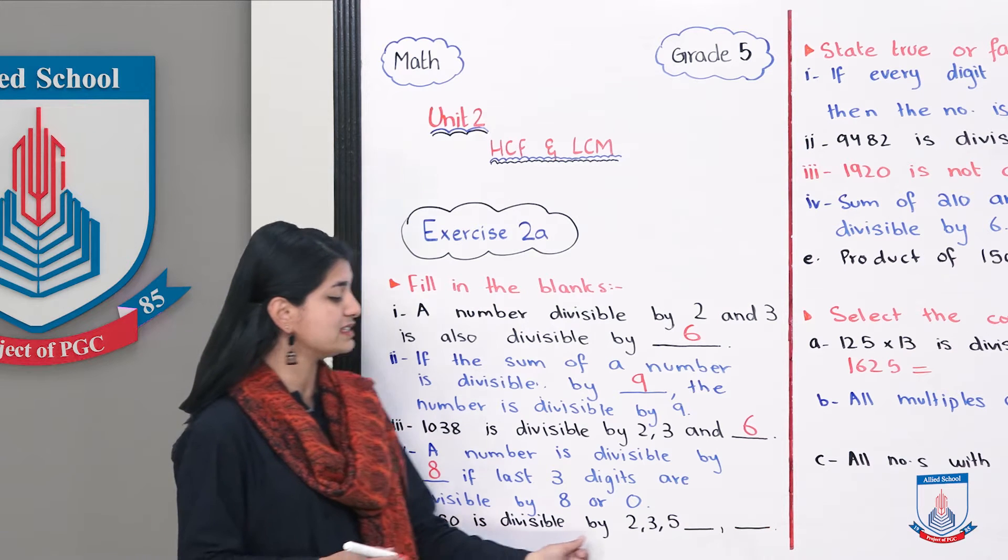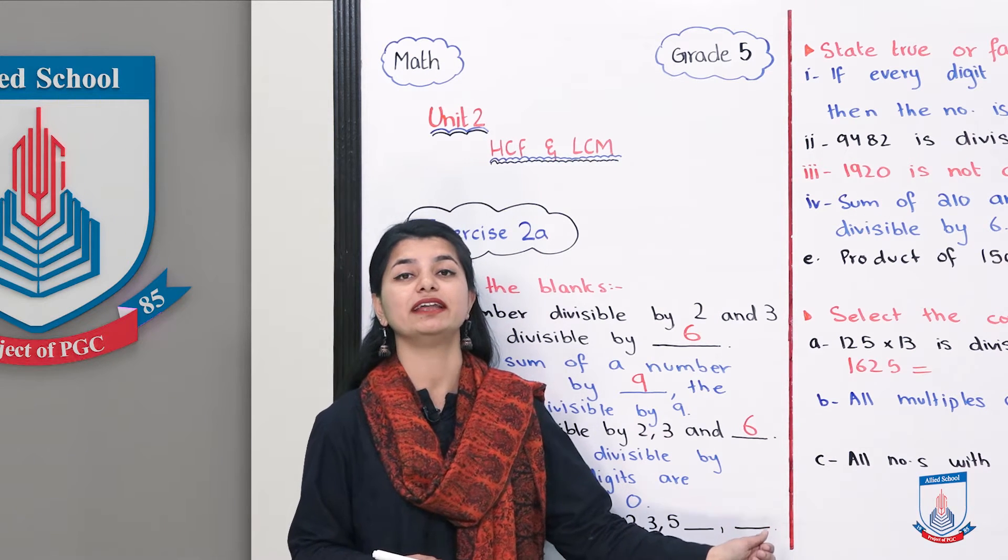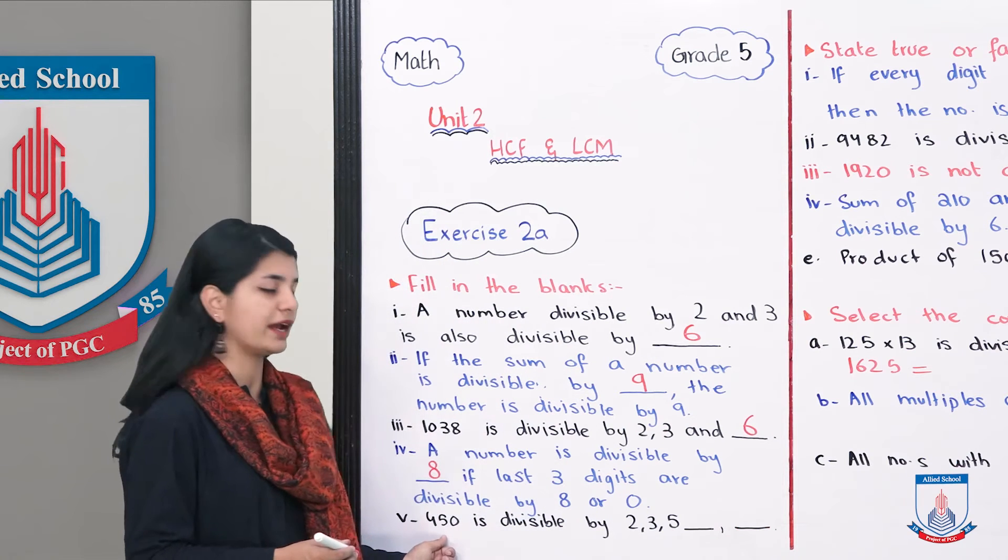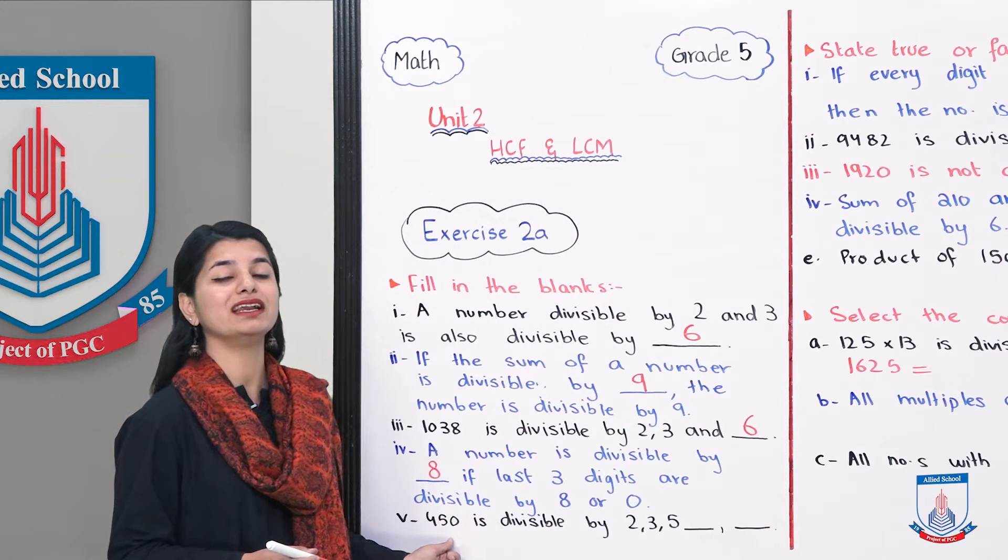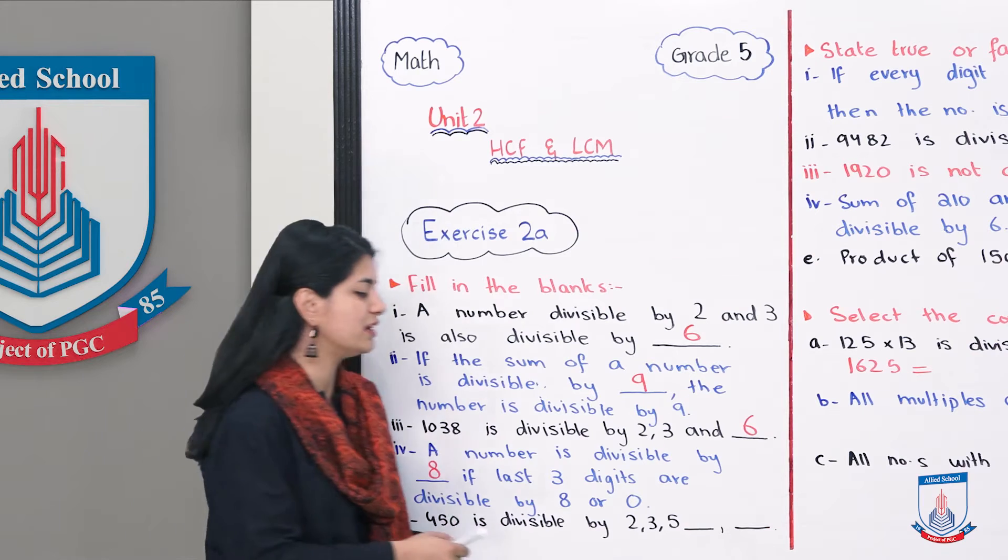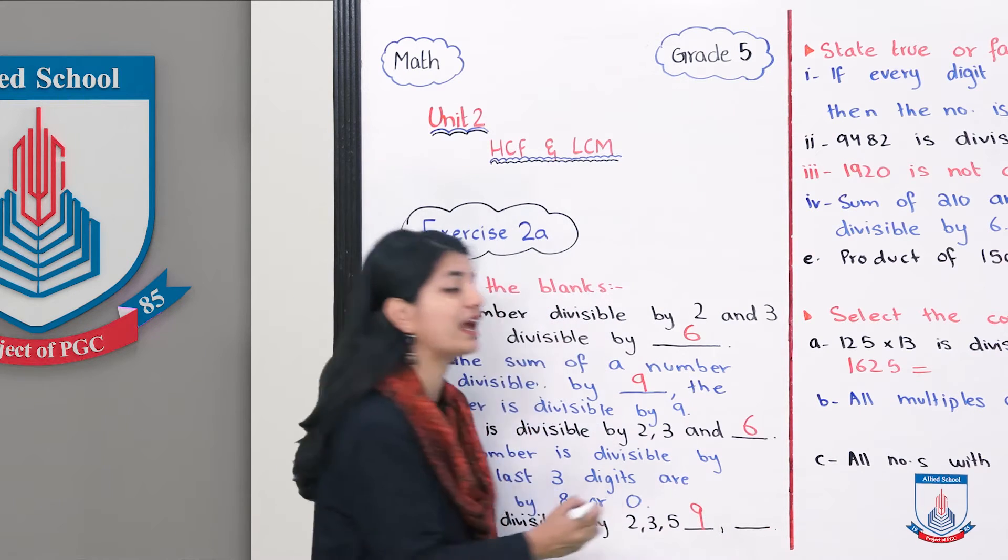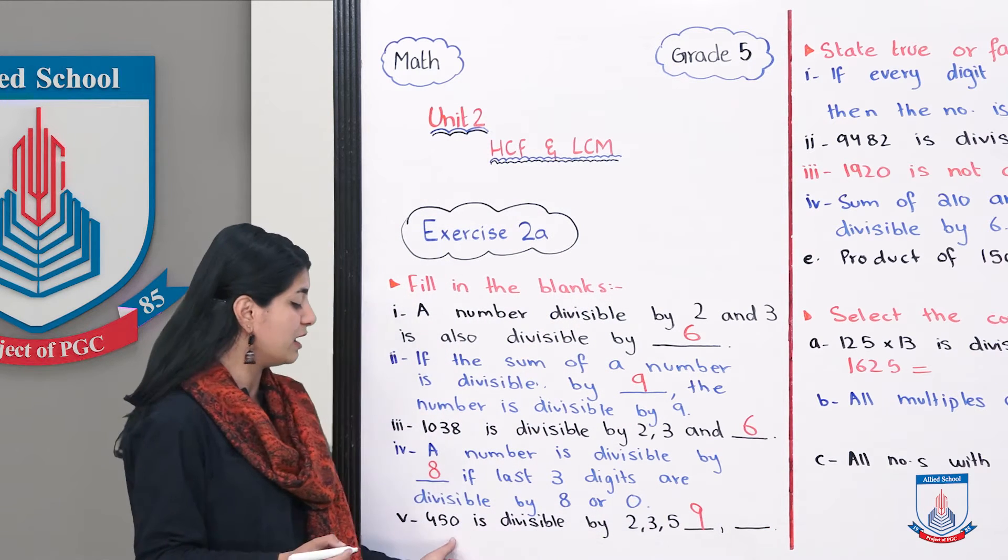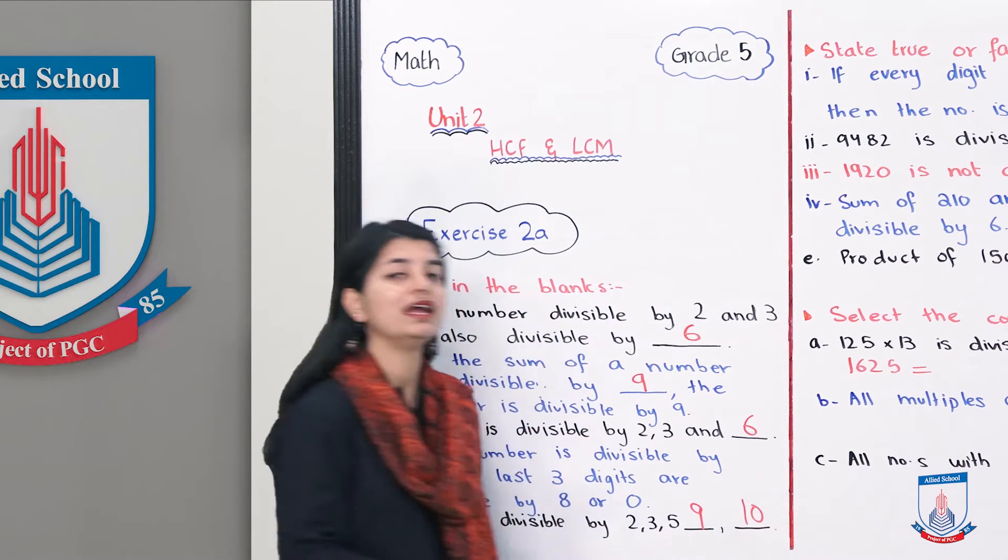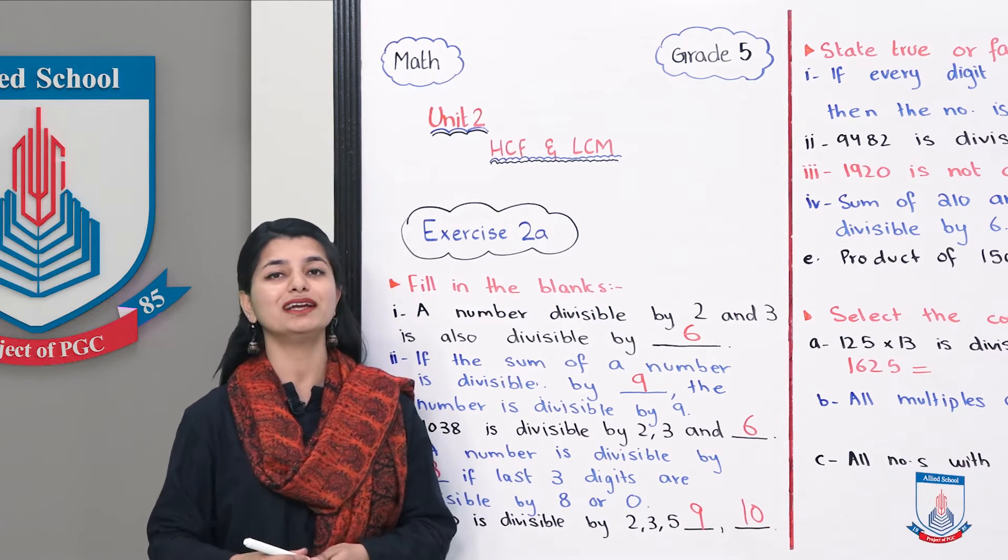Lastly, 450 is divisible by 2, 3, 5, and dash and dash. Now 450, if we add 4+5+0, this sum is 9, so it can be divided by 9. And the end is 0, so it is divided by 10. So we have filled all the blanks in this way. Let's go see question number 2.